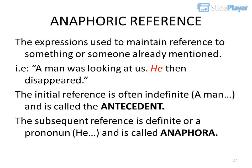Anaphoric reference: the expressions used to maintain reference to something or someone already mentioned. For example: 'A man was looking at us. He then disappeared.' The initial reference is often indefinite — 'a man' — and is called the antecedent. The subsequent reference is definite or a pronoun — 'he' — and is called an anaphor.